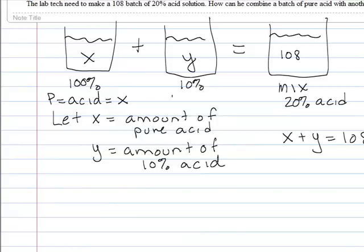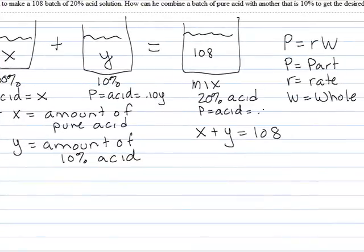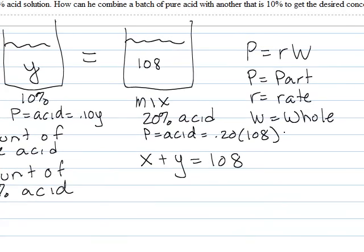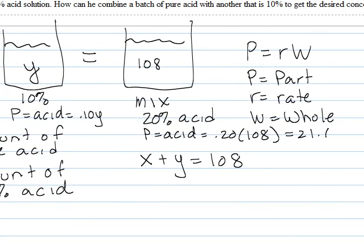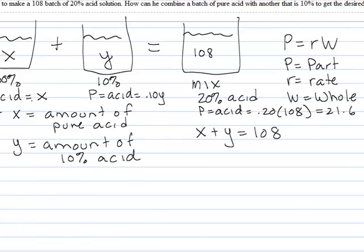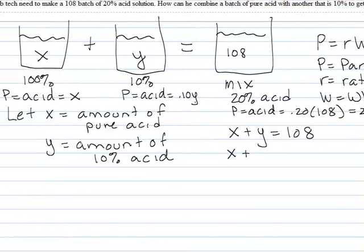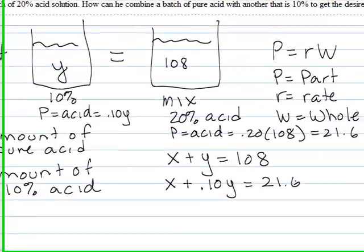Though, on this one, the how much acid is in here, again, the part is the acid, is 10% of the Y. And as we were talking about before, the acid in here is the rate times the whole amount. Which, if you multiply these two numbers together, you would get 21.6. So then, how much acid is in the first one, plus how much acid is in the second one, is equal to how much acid when we mix together.